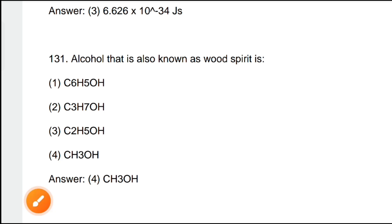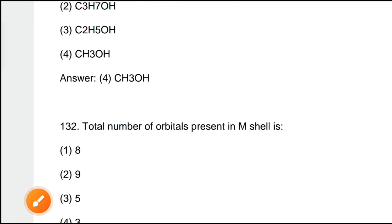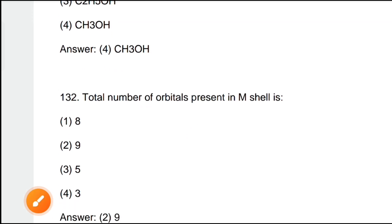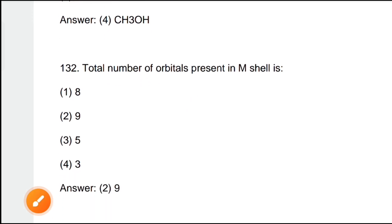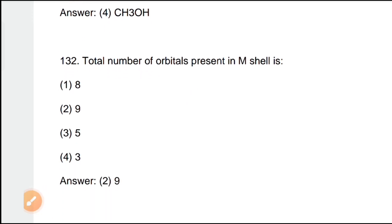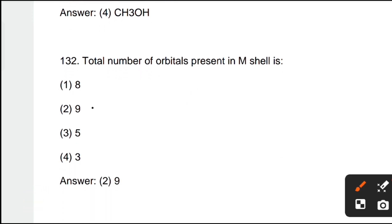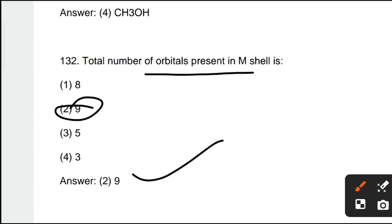Next question, number 132: total number of orbitals present in the M shell. Nine is the correct answer — there are nine orbitals present in the M shell.